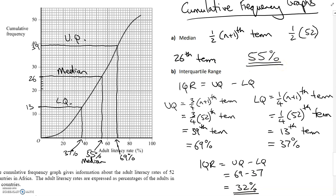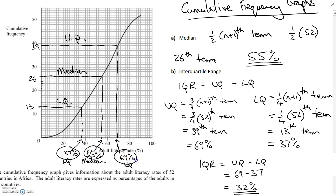So to summarise: median is halfway in — 52 things, halfway is the 26th term. Draw a line across from the 26th, line down, that value is the median. For the interquartile range: three-quarters of the way in and one quarter of the way in. Divide 52 by 4 to find the quarters. Draw lines across for lower and upper quartiles, then draw lines down. Don't forget — the 39th, 13th, and 26th terms are just positions in the data; the actual values read off the axis are your median, upper quartile, and lower quartile.